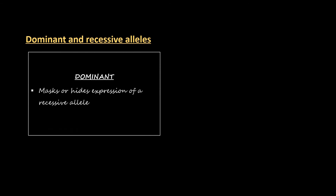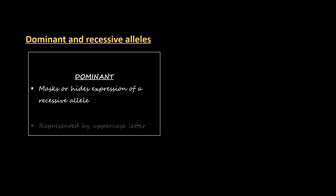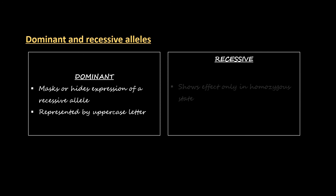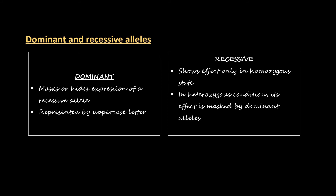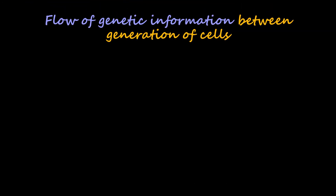Dominant alleles mask or hide the expression of recessive alleles and are represented by uppercase letters. Recessive alleles show their effect only in the homozygous state; in the heterozygous condition their effect is masked by the dominant allele, and they are represented by lowercase letters.